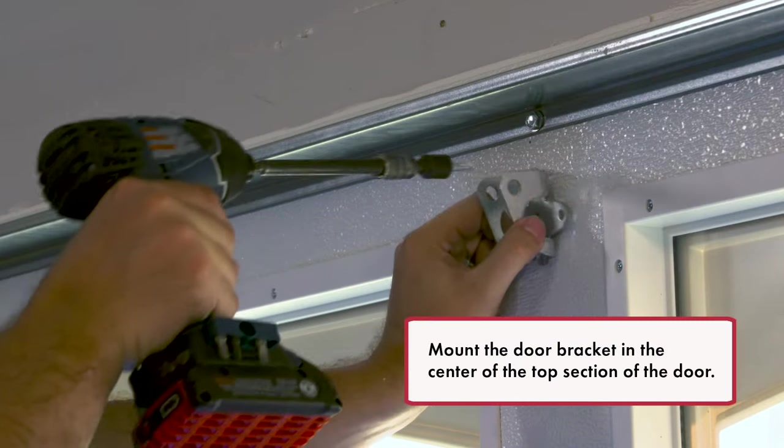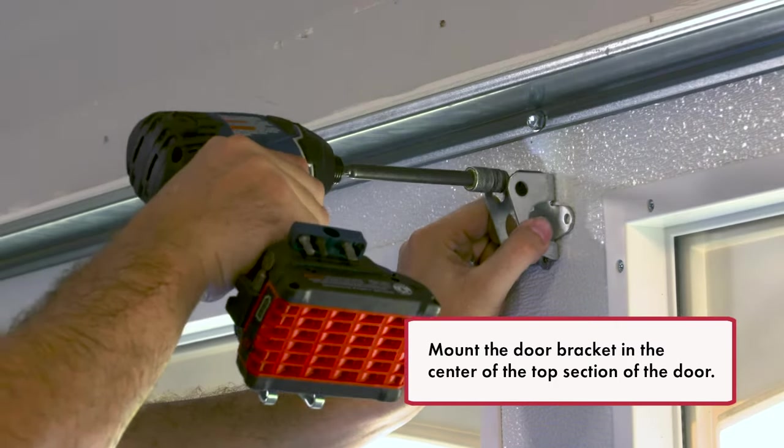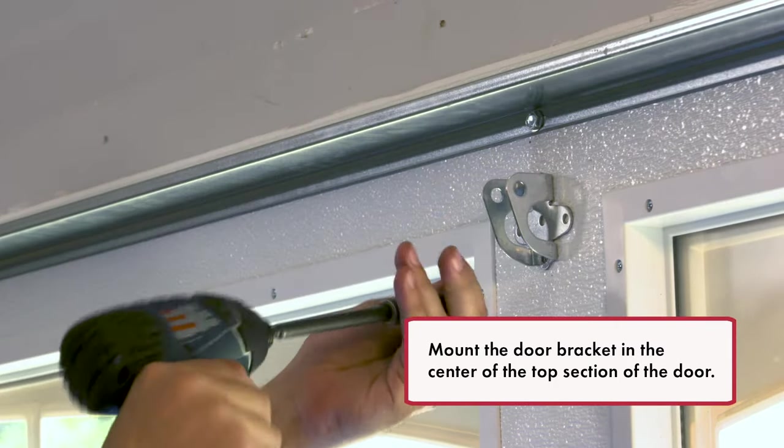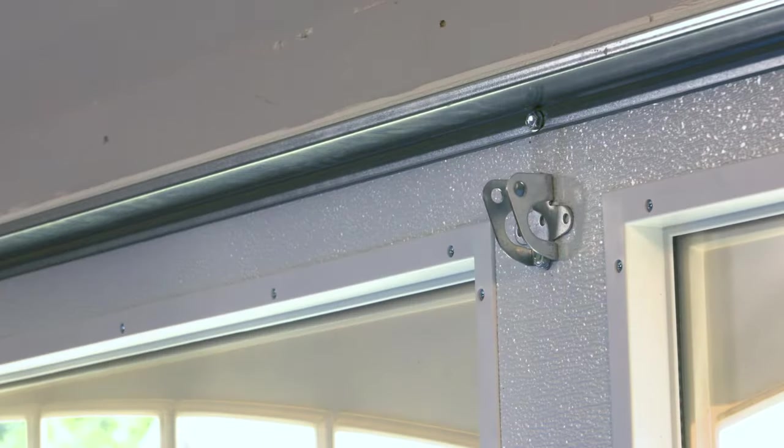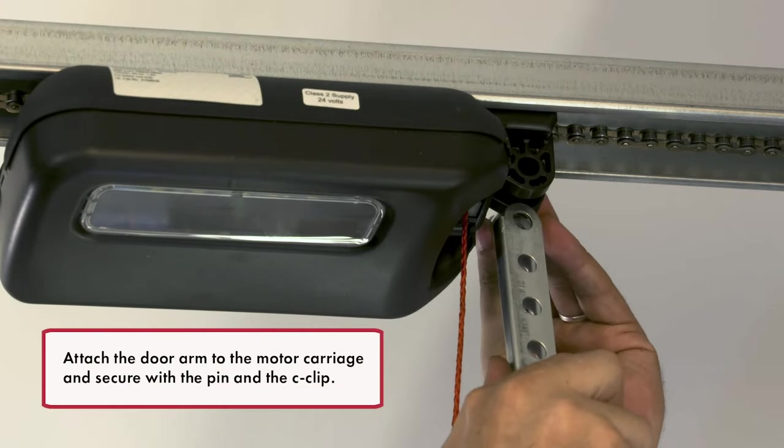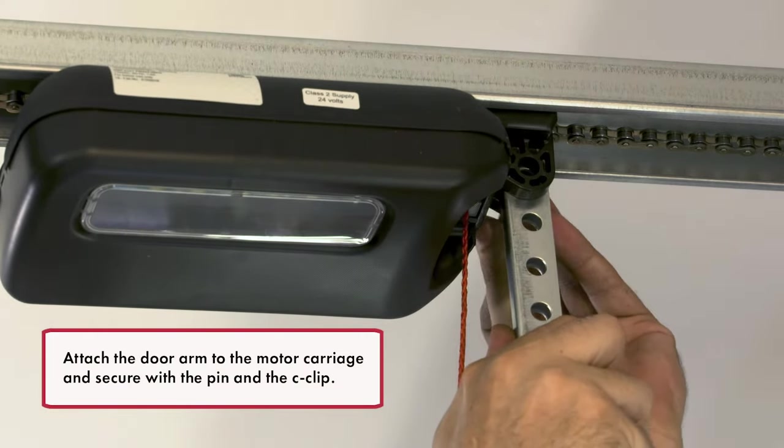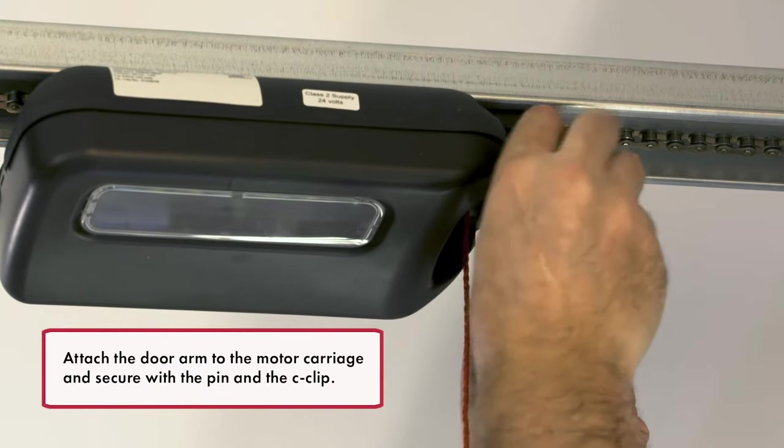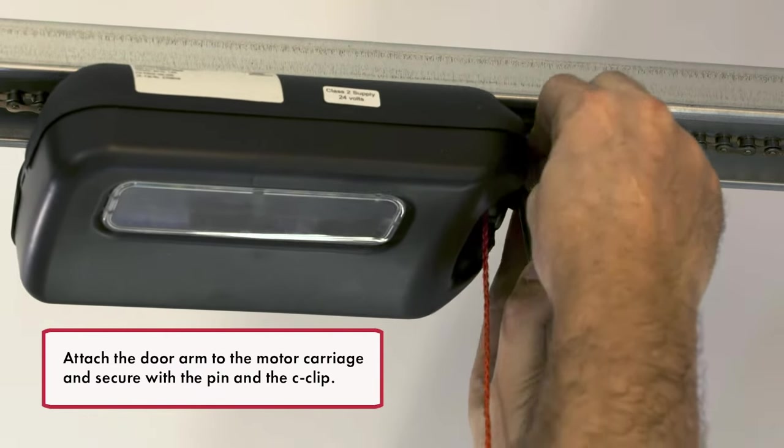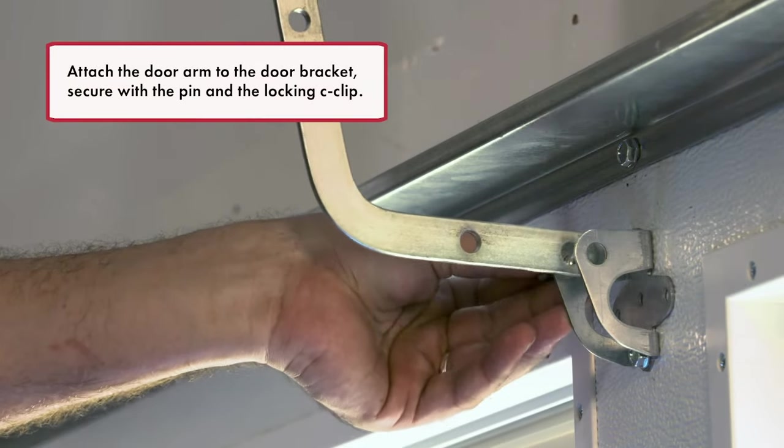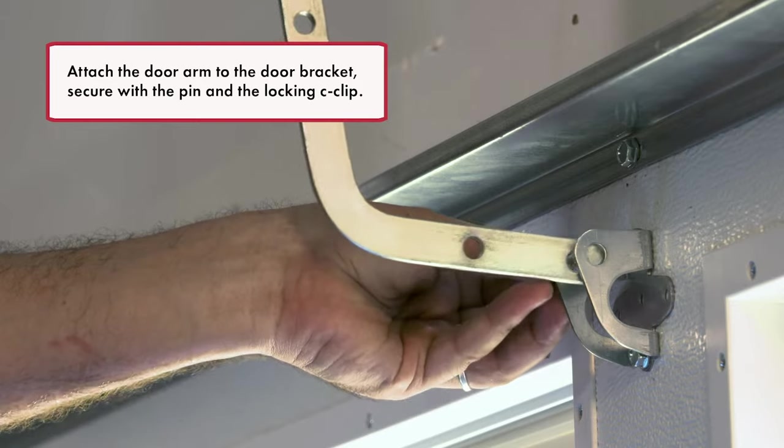Mount the door bracket in the center of the top section of the door. Attach the door arm to the motor carriage and secure with the pin and the C-clip. Attach the door arm to the door bracket and secure with the pin and the locking C-clip.